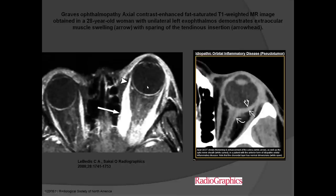Thyroid eye disease doesn't have to be symmetrical and can be more prominent on one side. It doesn't have to show abnormal thyroid levels at the time of examination, making it confusing to distinguish from orbital pseudotumor, also called idiopathic orbital inflammatory disease. Both have inflammation, proptosis, and an infiltrative autoimmune process. The key difference: thyroid eye disease is painless with muscle enlargement sparing the tendon attachment, while orbital pseudotumor is painful.